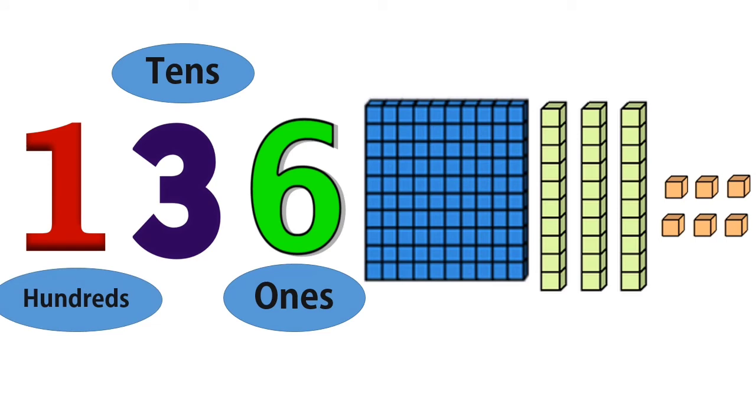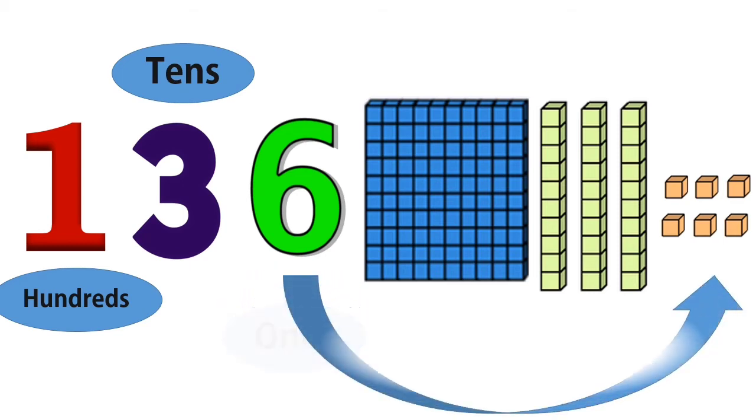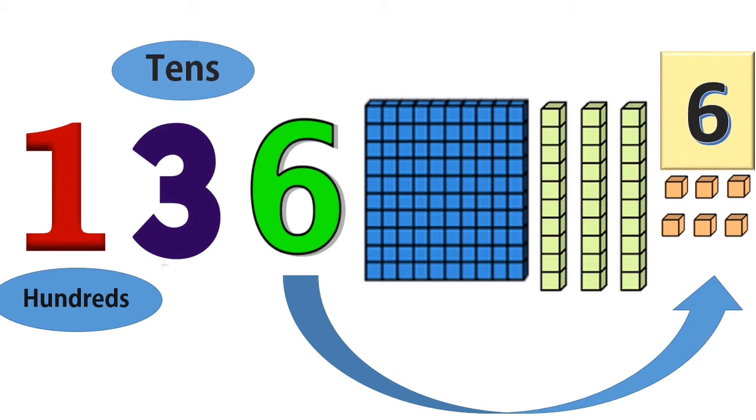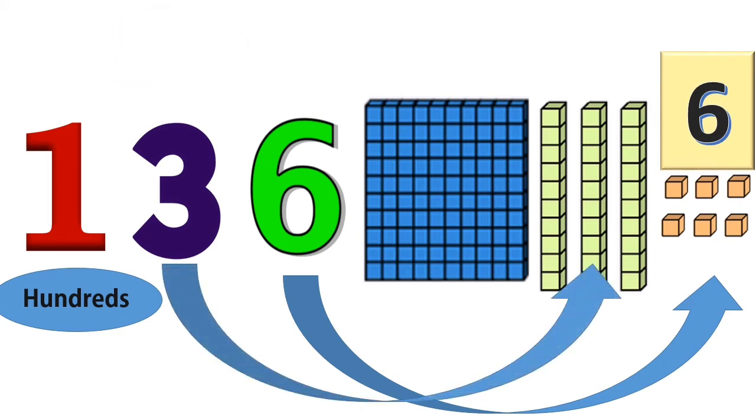The number six, it is at the ones place, so it's worth itself, only six. But the number three, it is at the tens place. So, ten times three, the number three here worth thirty.